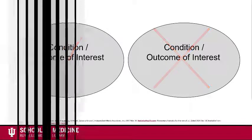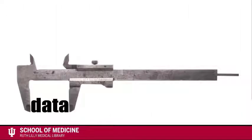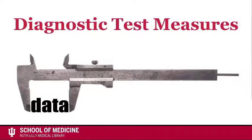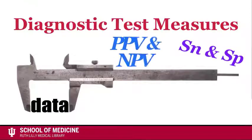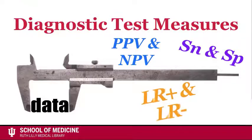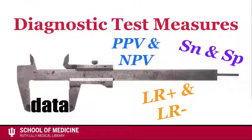Diagnostic test accuracy is reported by using diagnostic test measures. Some of these are sensitivity and specificity, positive and negative predictive values, and positive and negative likelihood ratios.